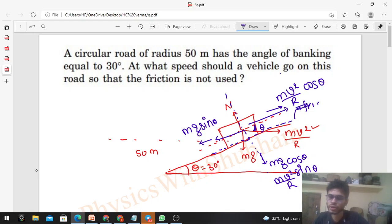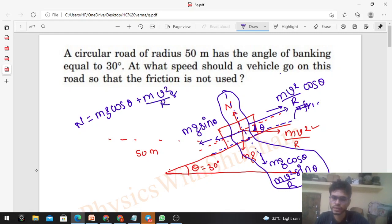If the friction is not acting, then the net force on this car should be zero. You can see that the normal value is coming out to be mg cos theta plus mv² upon r into sin theta. And the forces along the road are mg sin theta and mv² upon r into cos theta. These two will be equal if mg...